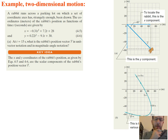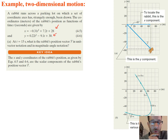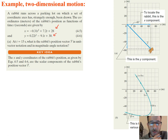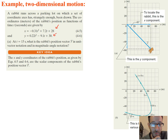So let's do an example. A rabbit runs across a parking lot on which a set of coordinate axes has been drawn. The coordinates in meters of the rabbit's position as functions of time are given by these equations. These equations should be pretty familiar from 1D motion — you have a separate equation for the x position and another equation for the y position. At time t = 15 seconds, what is the rabbit's position vector r in unit vector notation and in magnitude-angle notation? Unit vector notation will use i and j; magnitude-angle notation gives the resultant magnitude accompanied by the angle.